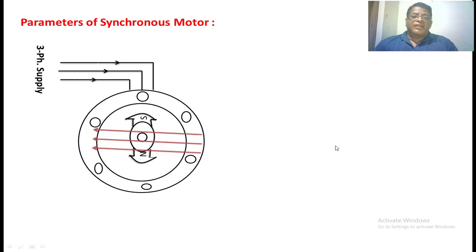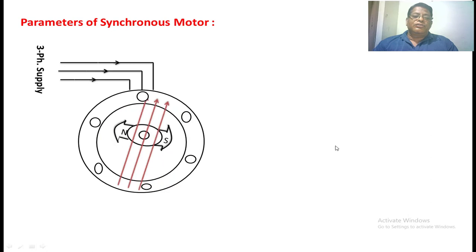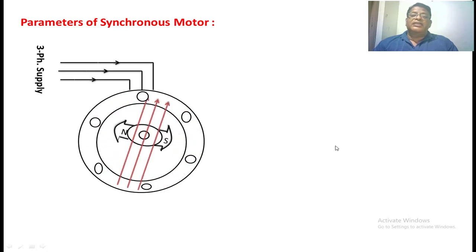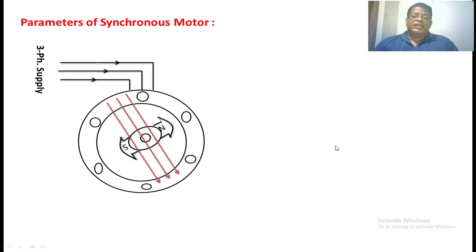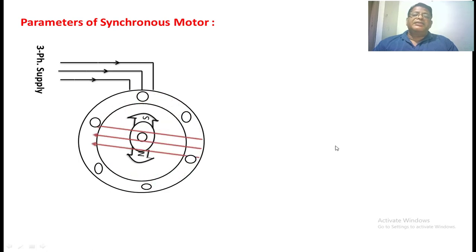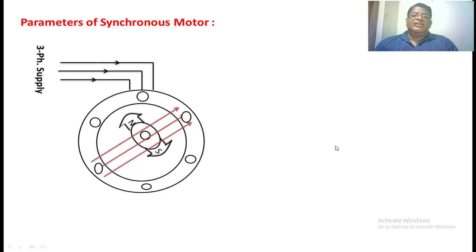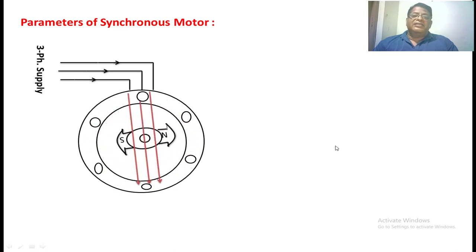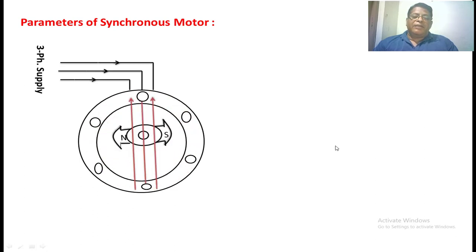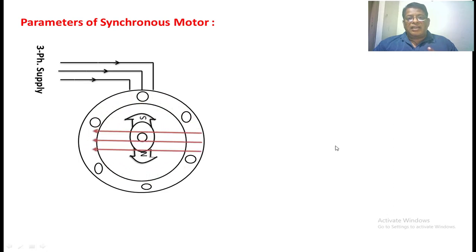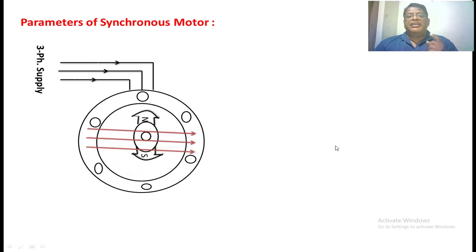One more effect: the armature current passing through the stator winding creates a flux which affects the main flux — that is nothing but armature reaction. That armature reaction is represented with the armature reaction reactance, denoted as Xa. So the stator winding has three parameters: armature resistance, leakage reactance, and armature reaction reactance.